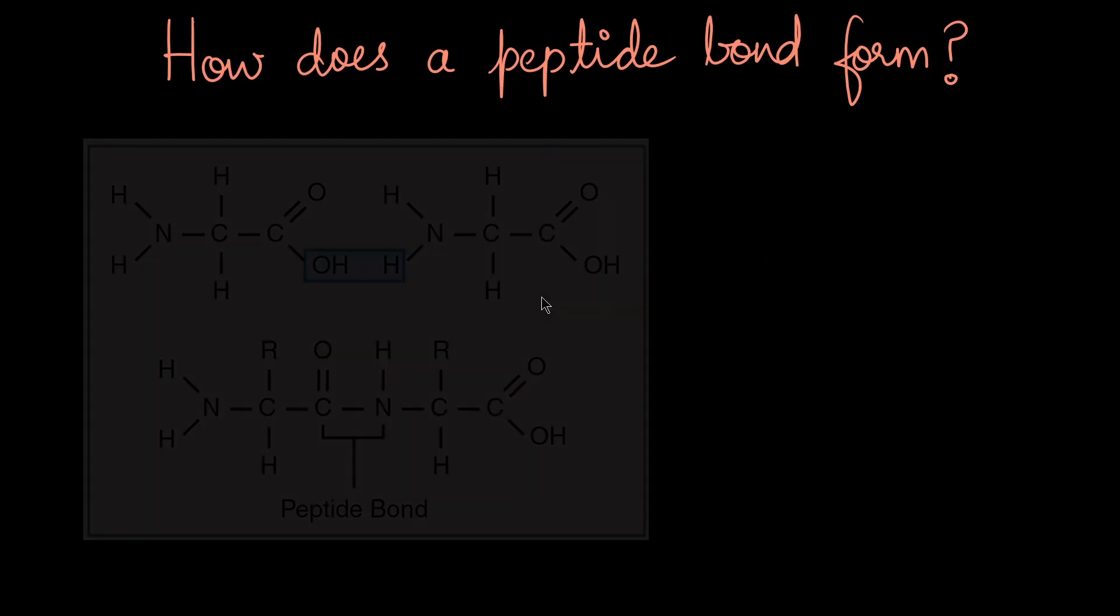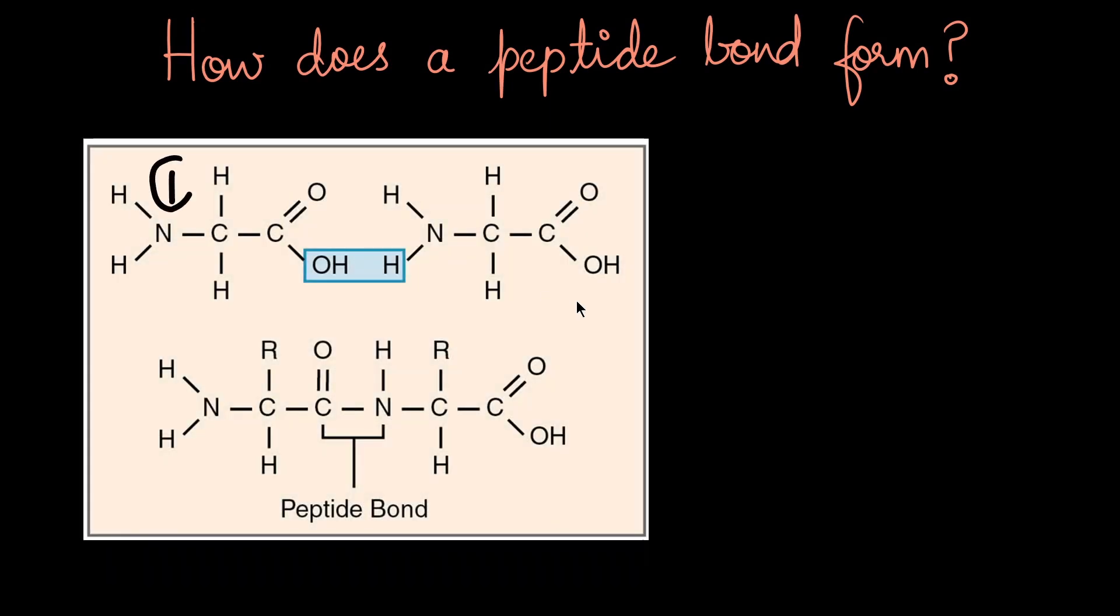Here we have two amino acids coming close together. The carboxyl group of the first amino acid and the amine group of the second amino acid react. There is a removal of water and it leads to the formation of this peptide bond: C-O-N-H bond, also called the amide bond. The resulting molecule is called a dipeptide because it has two amino acids in it.